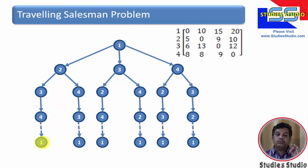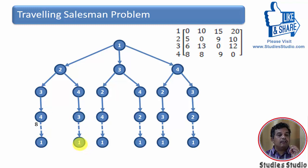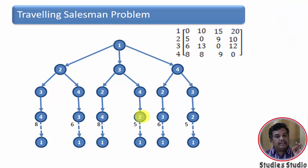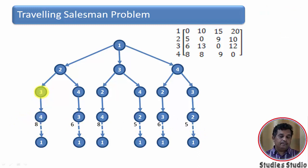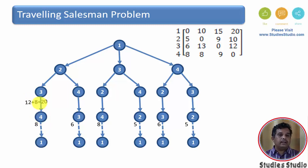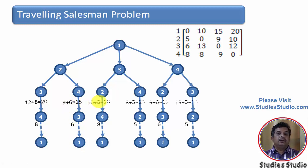If you want to travel to vertex 1 from vertex 4, the cost is 8. If at vertex 3 and going to vertex 1, the cost is 6. If at vertex 2 going to vertex 1, the cost is 5. So 3 to 4 costs 12, and 4 to 1 costs 8; the combined cost from vertex 3 through 4 back to 1 is 20. From vertex 4 to vertex 1 the cost is 15.